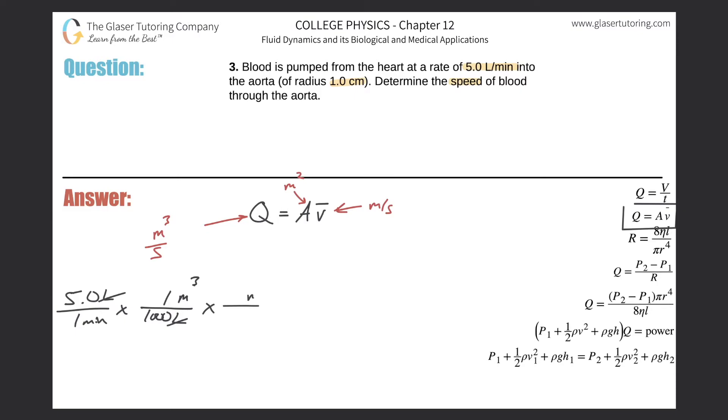the liters cancel. Now I need to get rid of the minutes. Since they're in the denominator, I'll put them in the numerator so they cancel. There's 1 minute every 60 seconds, so the minutes cancel. Now we have our value: 5 divided by 1000 times 60.